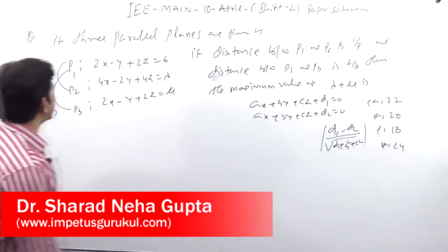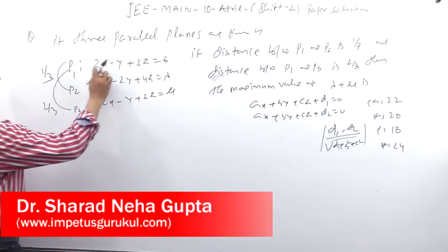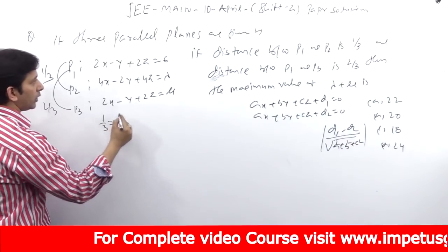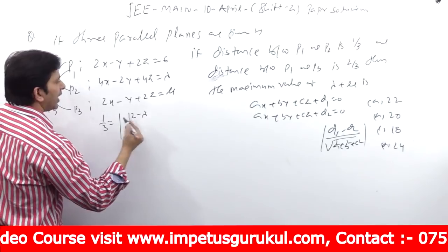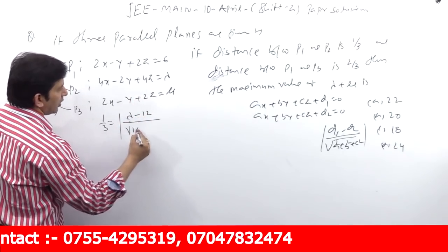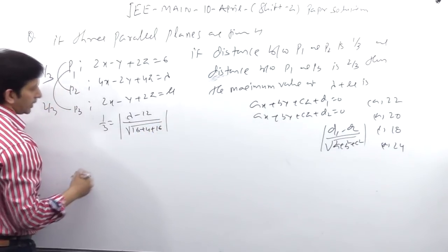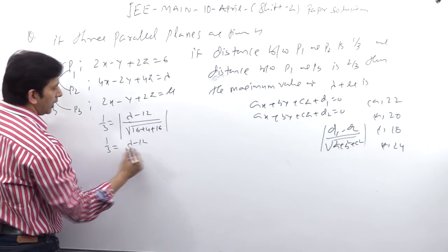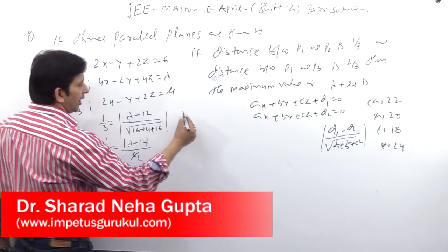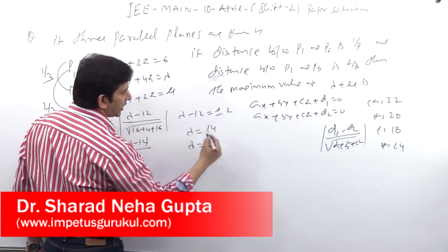Now here, we have 4x - 2y + 4z. The distance is 1/3, so 1/3 = |12 - λ| upon √(16 + 4 + 16) = 6. So √36 = 6, and 1/3 = |λ - 12| / 6, which means λ - 12 = ±2. Therefore λ = 14 or λ = -2. For maximum, λ = 14.